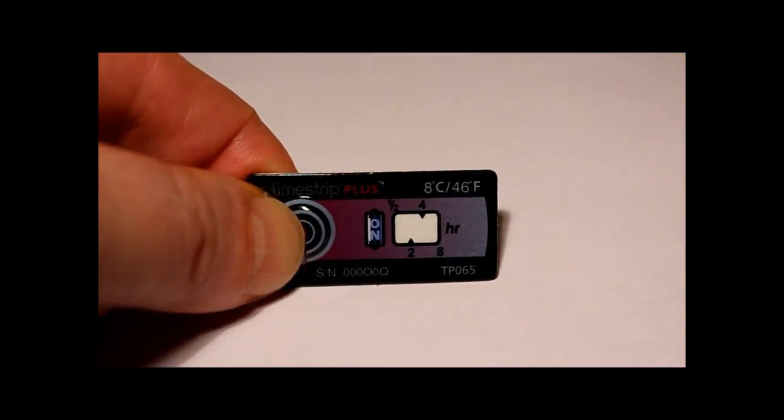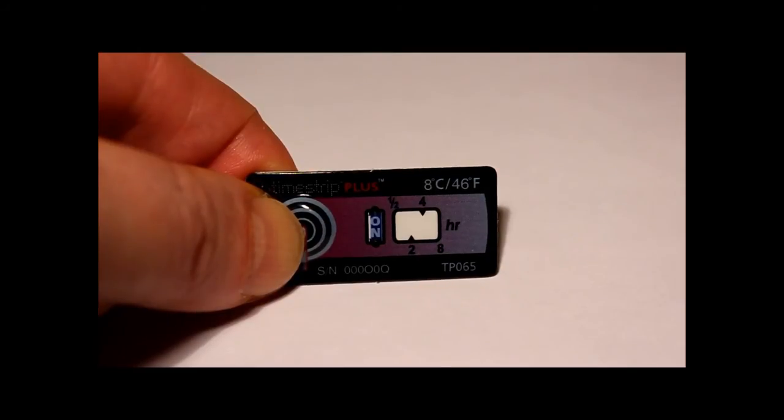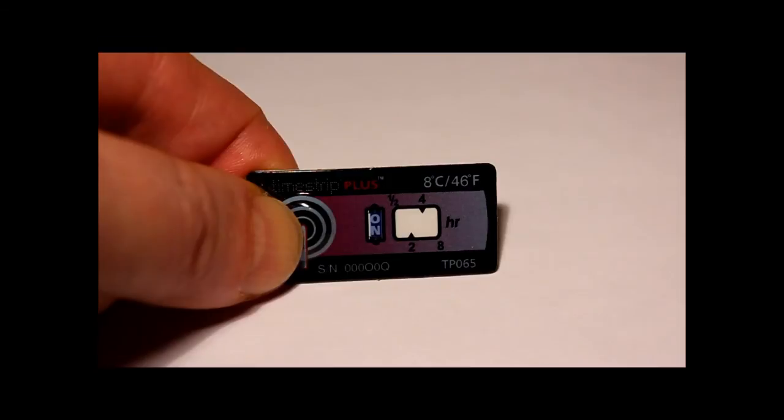The time strip plus is now monitoring and if ever exposed to its threshold temperature, the observation window will begin to record the minimum number of hours above its threshold temperature, like this.